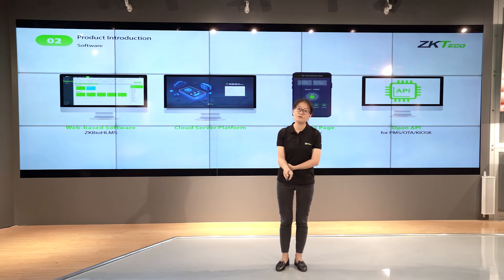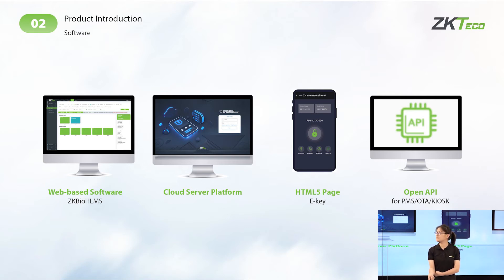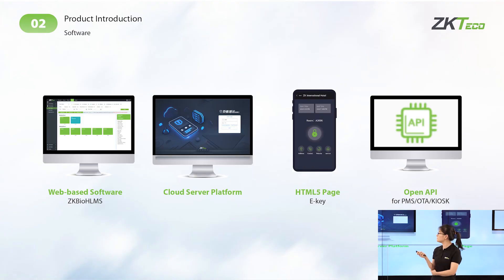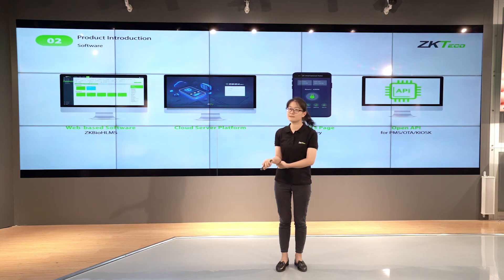The most important part of the solution is our platform software, which consists of four parts. The first is the web-based software, HLMS — Hotel Lock Management System. The second is our cloud server platform. The third is our H5 page, which is the key of the solution. And the last one is the open API.